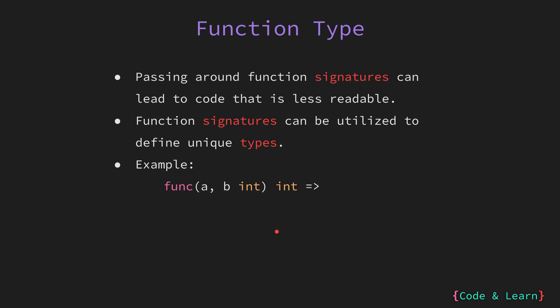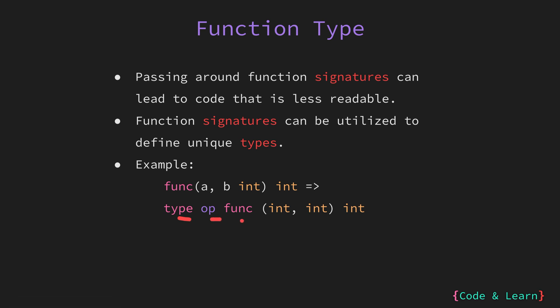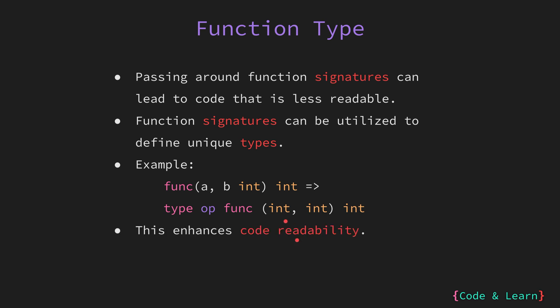Here you can see we have a function signature that accepts two int input values and returns an int. We can define a type out of it. I'm saying type operation is of type function that takes two input values and returns a single int value. Defining a type based on function signatures like this makes your code more readable. It provides a clear indication of the kind of function expected to conform to that type, which can be beneficial for documentation and understanding the codebase.